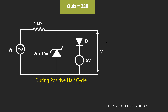The voltage at the cathode of this diode is equal to 5V. That means whenever the voltage at the anode is 5.7V, this diode D will conduct. And for this Zener diode to operate in the breakdown region, the voltage across the Zener diode should be greater than 10V.